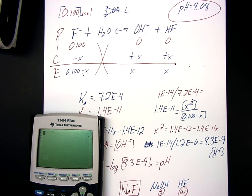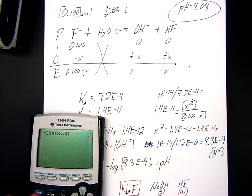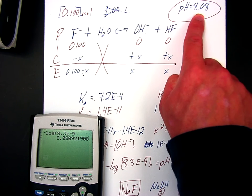So let's go negative log 8.3E negative 9. And voila, 8.08, which is the given number from the problem.